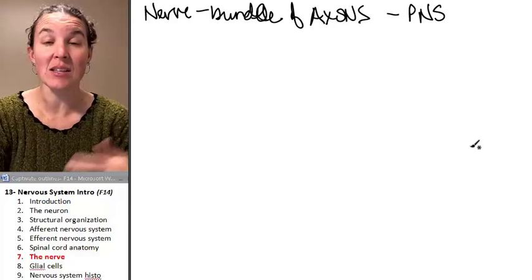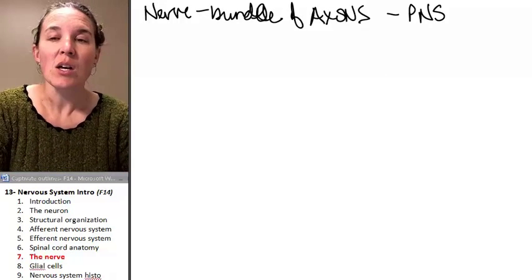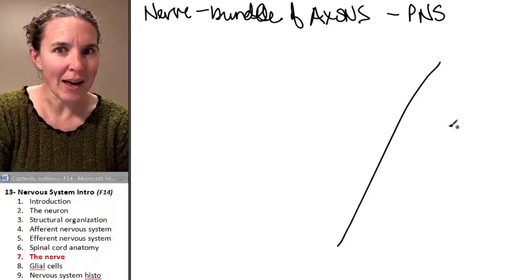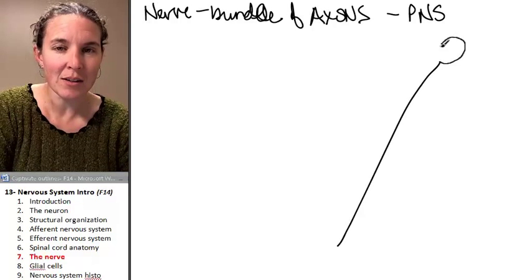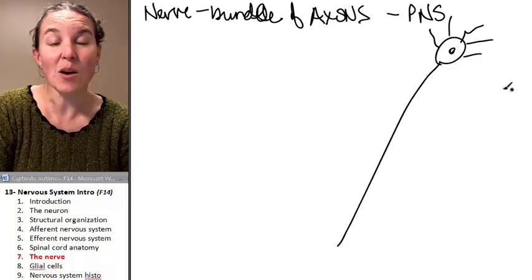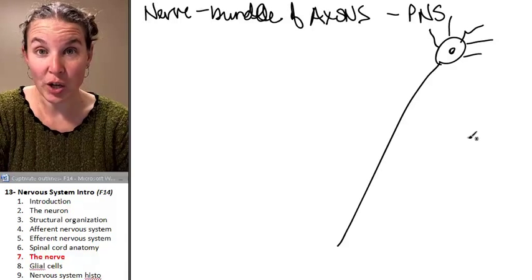It's a bundle of axons in the peripheral nervous system. So that means that we probably are going to have axons in our nerve. Look. Who's this guy? It's my cell body. Is my cell body part of my nerve? No.